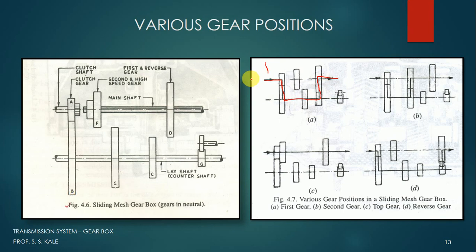In first gear position, the diameter of gear C and gear D are different, and the diameter of D is bigger than C. So when power is transmitted from C to D, there is a speed reduction, and this reduced speed is available at the first gear position.